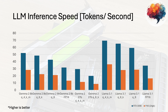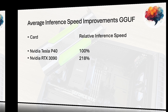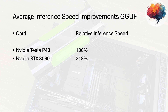We will start with LLM inference speed. As you can see in this chart, we've tested various models and quantizations. The blue bar represents the RTX 3090 while the orange bars show the P40's performance. The RTX 3090 is consistently faster, varying between around 180% to 260%, but mostly around 200%. To summarize, we calculated an average improvement score with the P40 as our baseline at 100%. The NVIDIA RTX 3090 shows an impressive 218% relative inference speed, meaning it is on average more than twice as fast as the P40 for LLM inference tasks.